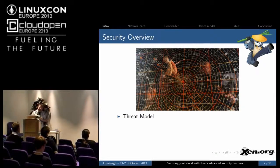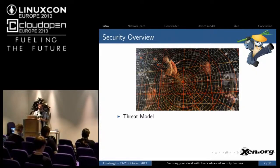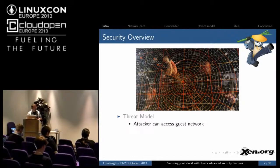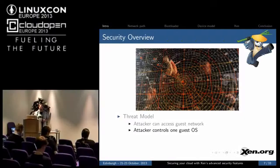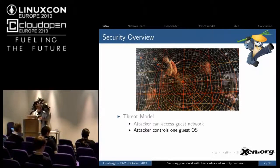So, security. The first thing you need to do when thinking about security is to define your threat model — what is it you're actually trying to protect against? What do you assume your attacker is able to do? In our example, we're going to assume the attacker can access the guest network to send packets to it. We're going to assume that he controls one guest operating system — either because the attacker has compromised one of your customer's operating systems, or because the attacker is one of your customers — and he's going to try and break out of that and attack other operating systems.